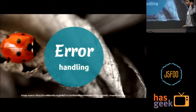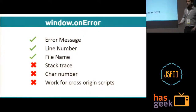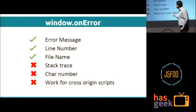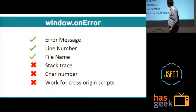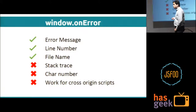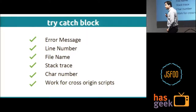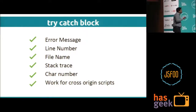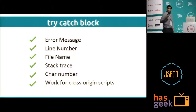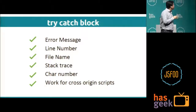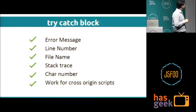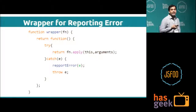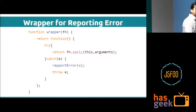Now let's move to error handling. We usually attach an error handling function with onError, but it lacks a few things — it has error message, line number, and file name, but it doesn't provide stack trace or character number, and it doesn't work for cross-origin scripts. To overcome this, we use a try-catch block, which gives all the information required to reproduce an error — stack trace, character number — and it even works for cross-origin scripts. This way we can make a wrapper function and wrap any function in a try-catch block to catch and report errors to the server.